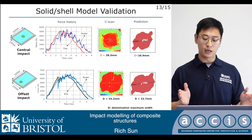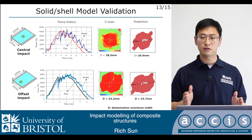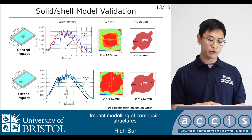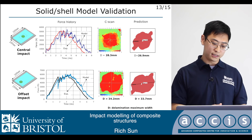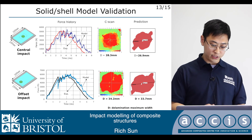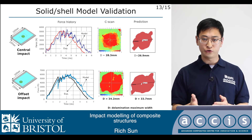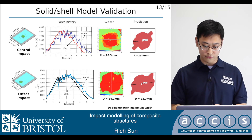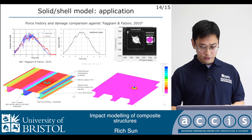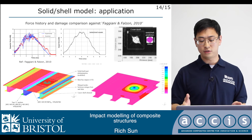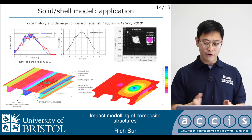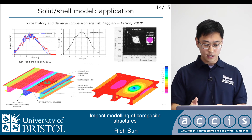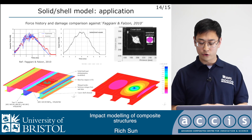To validate this approach, we performed two impact tests on a large plate — four times larger than the standard plate, at 200mm × 300mm. One impact was at the center and one at an offset position, allowing us to study the model's sensitivity to boundary conditions. The approach gave very good results in force history and delamination profile. We further applied this to a large complex stiffened panel, showing good correlation with results from literature in both force history and damage projection.